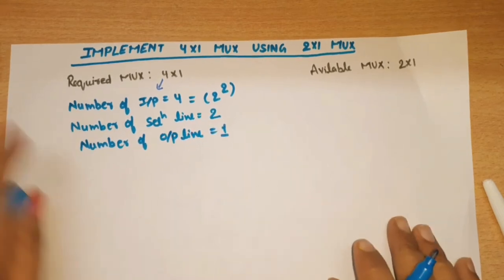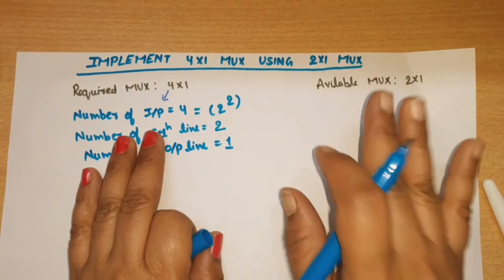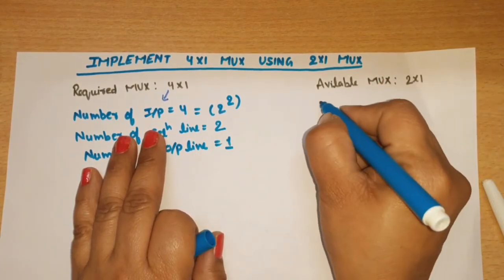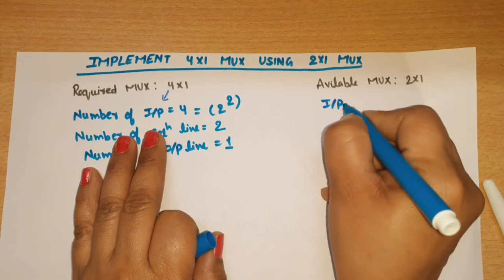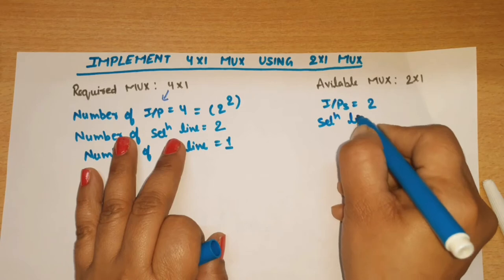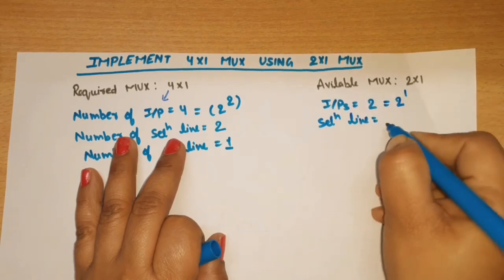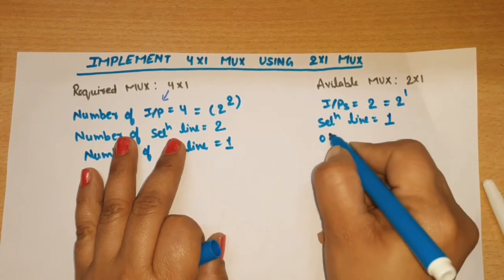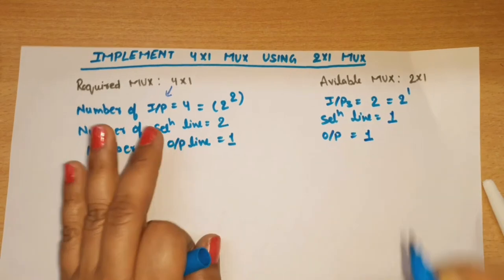In the same way, we can find the number of inputs for 2-to-1 MUX. Number of inputs is equal to 2. Selection lines: 2 can be written as 2 raised to power 1, which means 1. Outputs will be the same, which is 1.